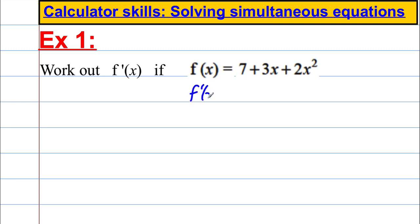f'(x) would be equal to, this is a number so it differentiates to 0, 3x differentiates to 3, and this polynomial here, bring down the 2, so it's 2 times 2, it's 4, and reduce the power by 1. So hopefully you'll get that.